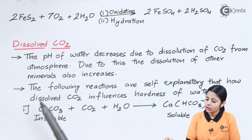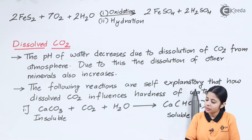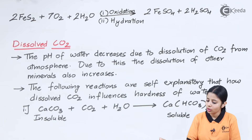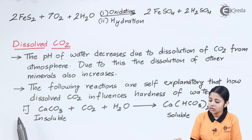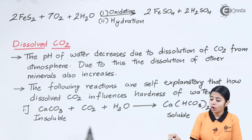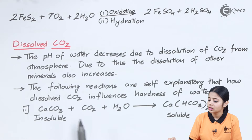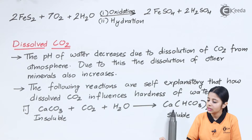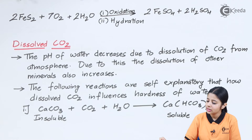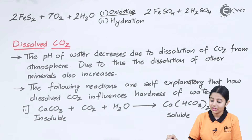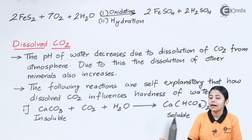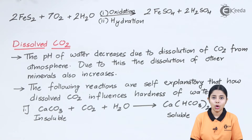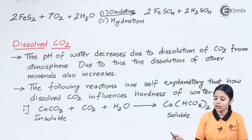The following reactions explain how dissolved CO2 influences hardness of water. CaCO3 is insoluble in water, but since the water contains CO2, the reaction CaCO3 + CO2 + H2O → Ca(HCO3)2 occurs. Ca(HCO3)2 is soluble in water, so the calcium that was insoluble before has now become soluble, making it an impurity in the water.